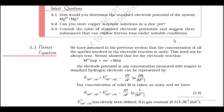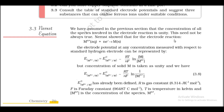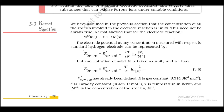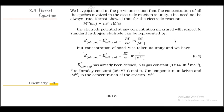Section 3.3: Nernst Equation. We assumed in the previous section that the concentration of all species is unity. This need not always be true. Nernst showed that for the electrode reaction Mⁿ⁺ + ne⁻ → M, the electrode potential at any concentration measured with respect to the standard hydrogen electrode can be represented by: E(Mⁿ⁺/M) = E°(Mⁿ⁺/M) − (RT/nF) ln(1/[Mⁿ⁺]), since the concentration of solid M is taken as unity.